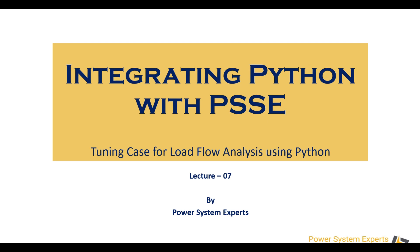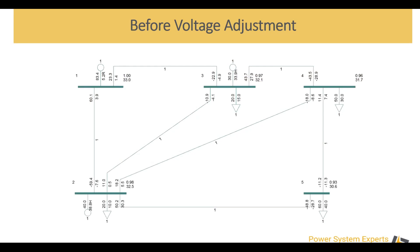Welcome everyone. In this session we are going to demonstrate how we can tune the case for load flow analysis using Python. Let's take forward the example which we discussed in our previous session. We have this five-bus case system here. The voltages on the buses are on the lower side — especially bus number five, where the voltages are only 93% or 0.93 per unit.